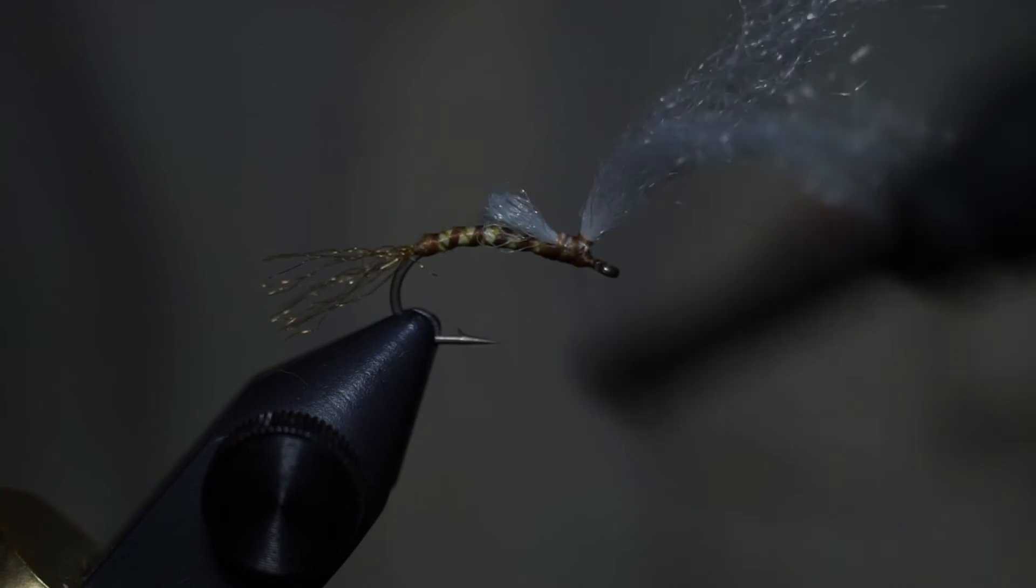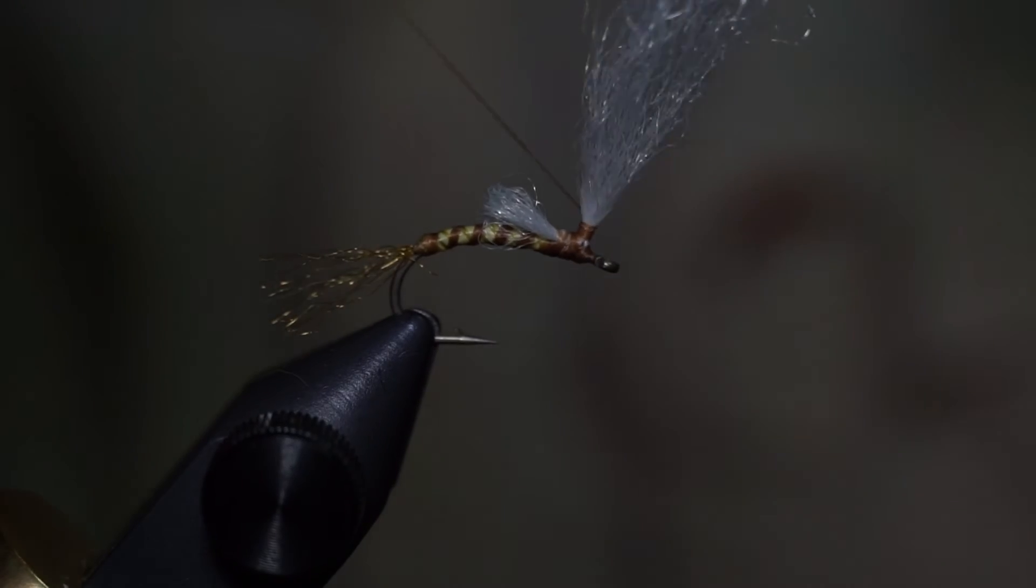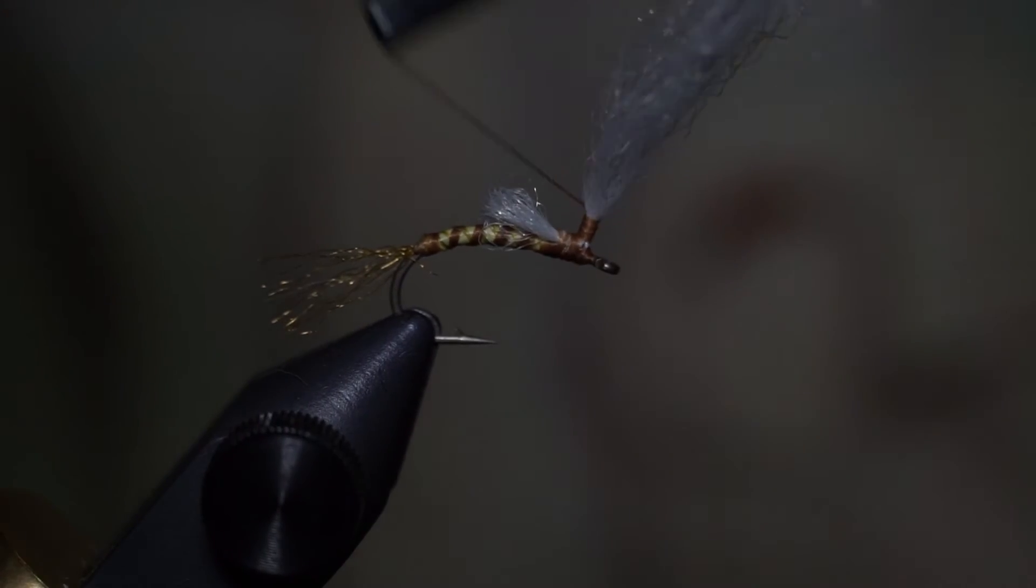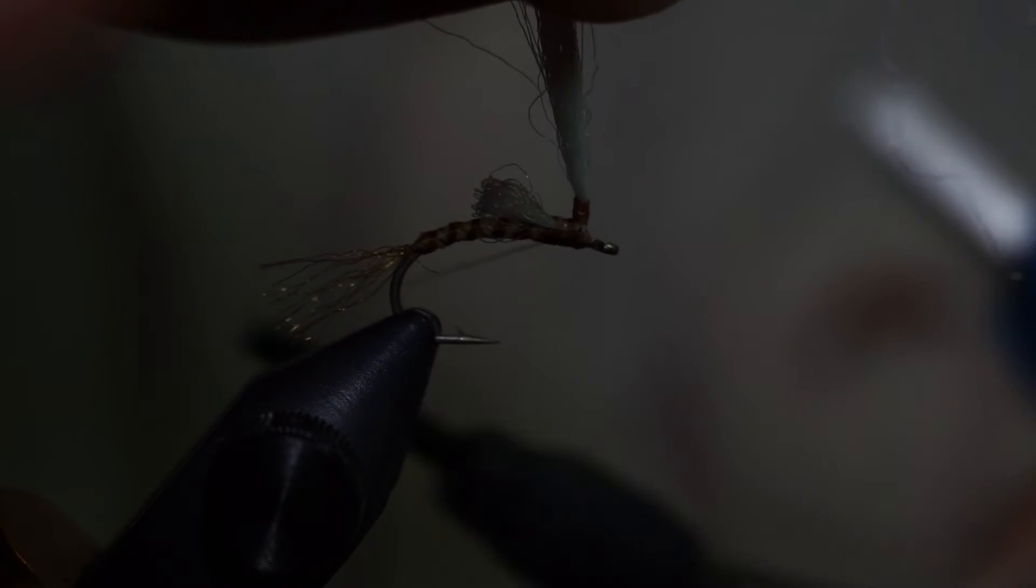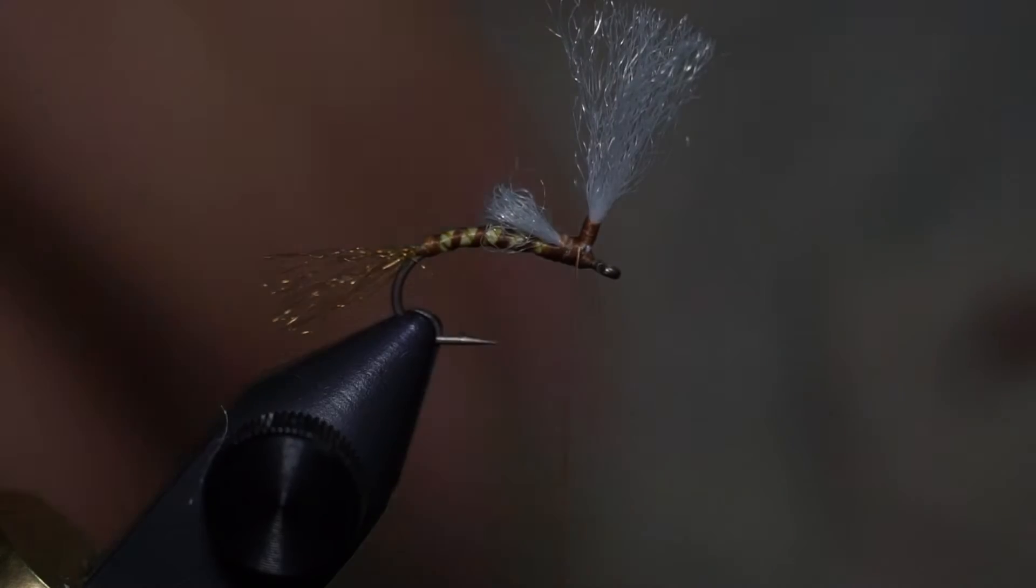Next, I'll wrap around the parachute post. Just go up about, I don't know, a little ways there. Trim it so it gets out of the way.